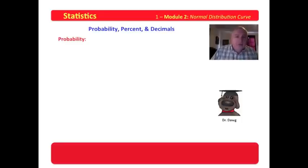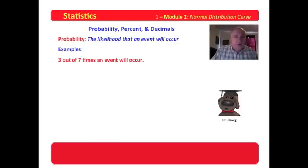We will begin with probability. Probability is the likelihood that an event will occur. Some examples of probability are that something should happen three out of seven times. For instance, I might as a child have back-talked my mother seven times and had a likelihood of getting a beating three out of seven of those times. Maybe I could have outrun her the other four. Three out of seven is an example of a probability. Ten out of thirteen or seventeen out of nineteen.